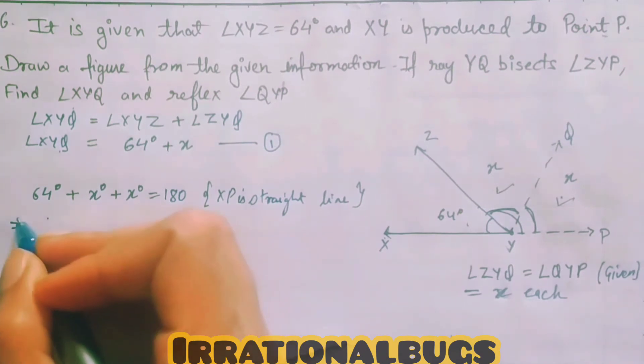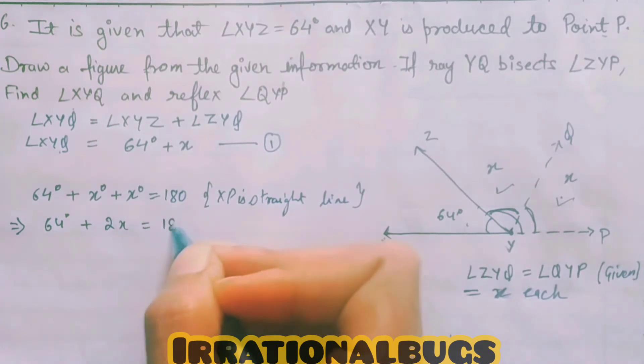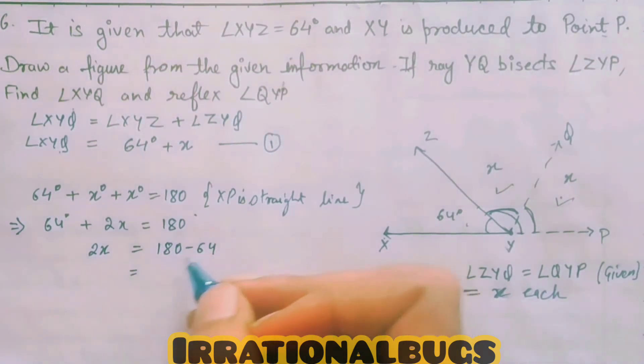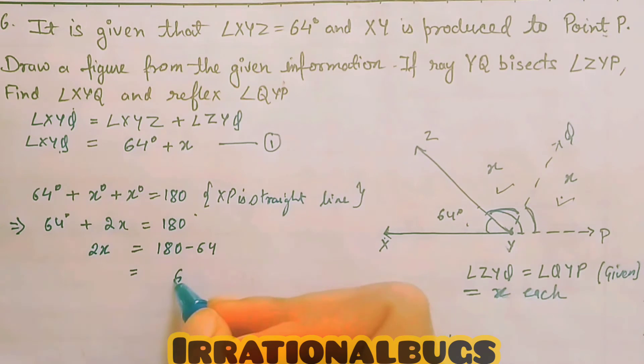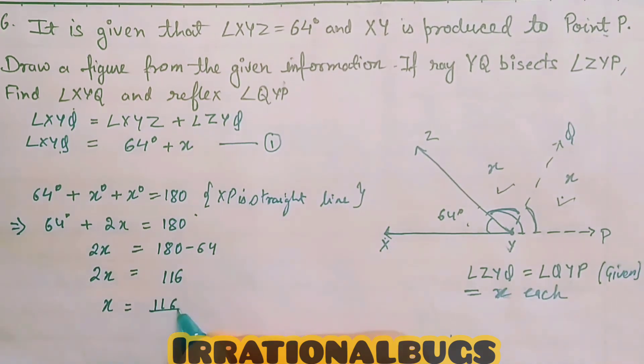So, we have 64 degrees plus 2X equals 180 degrees. 2X equals 180 minus 64. 180 minus 64, 0 minus 4 is 6, 7 minus 6 is 1, that's 116. So, X की value हमारे पास आ रही है 116 upon 2. That is 58 degrees.